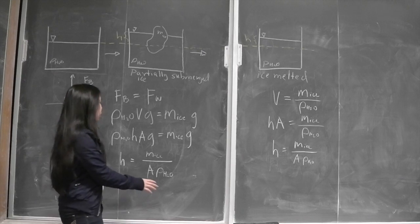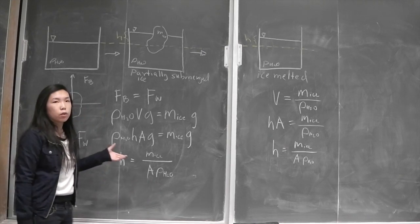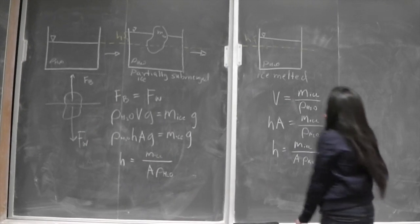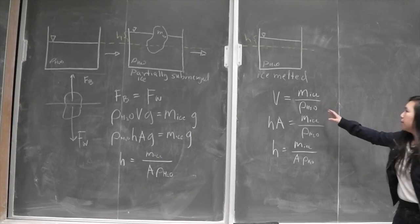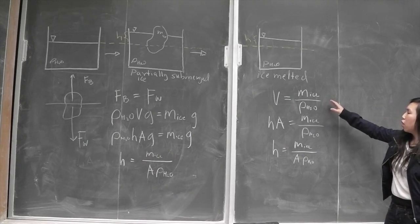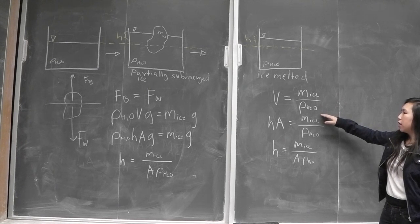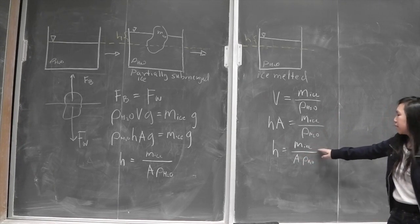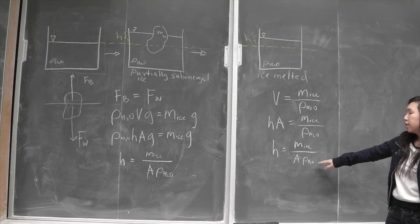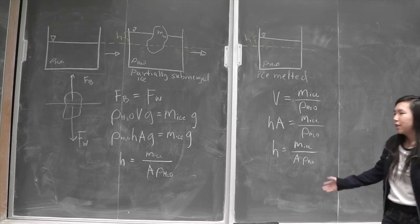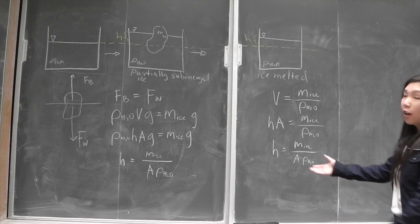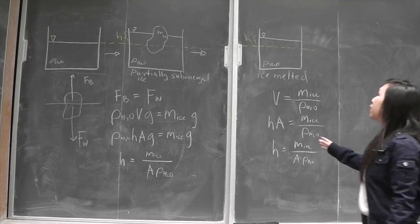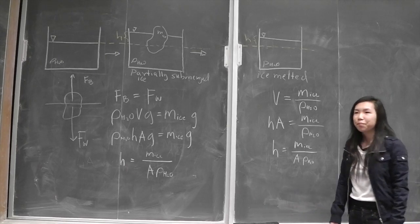And we'll prove how this height is now equal to the height when the ice has melted. So volume is equal to the mass of the ice over density of water. And so the height is equal to mass of the ice over area times density of water. And we can see how these two heights are equal to each other, meaning that the water level does not change.